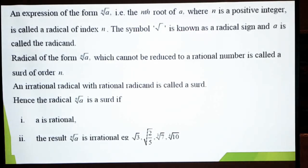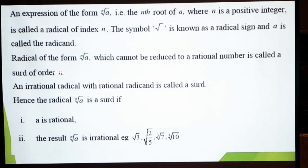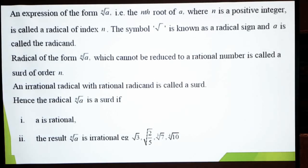This symbol is known as a radical sign and a is called the radicand. اور اس میں یہ جو a ہے یہ radicand کہلاتا ہے۔ Radical of the form nth root of a which cannot be reduced to a rational number is called a surd of order n. یہ اب یہاں سے surd کی definition ہے — کہ اگر آپ کے پاس کوئی nth root of a radical form میں کوئی ایک expression موجود ہے اور اس کو آپ مزید reduce rational form میں نہ کر سکے۔